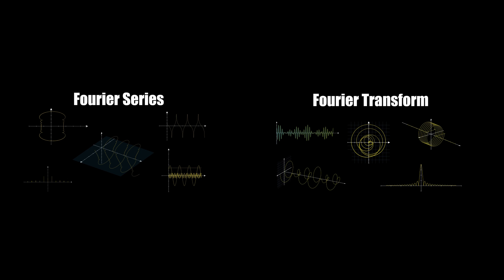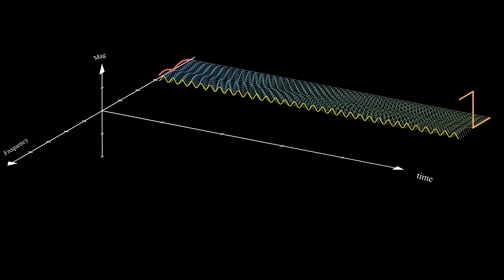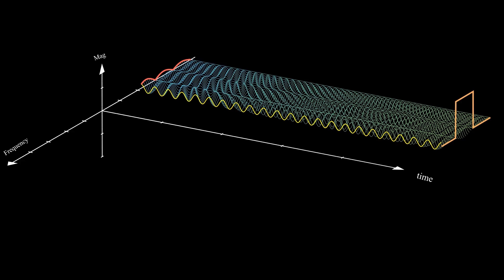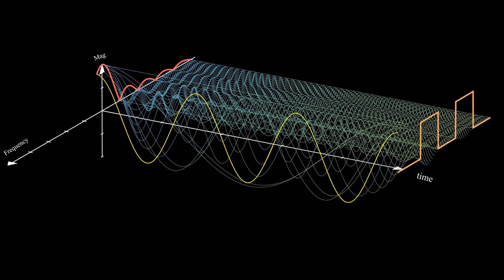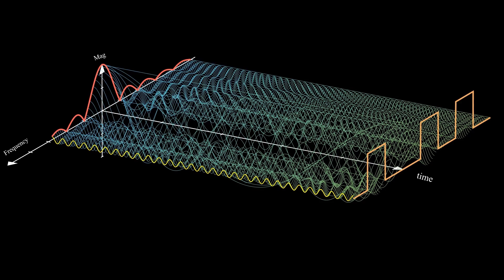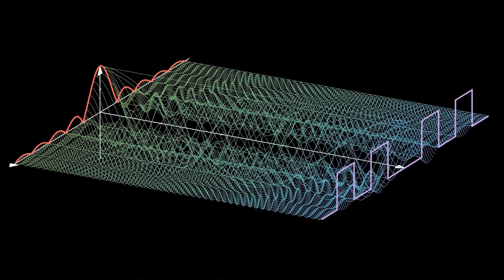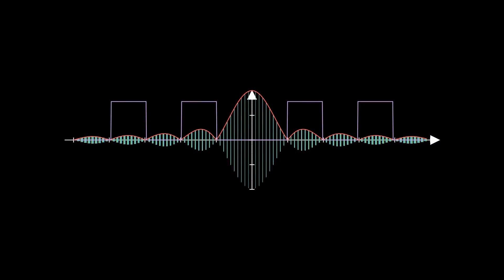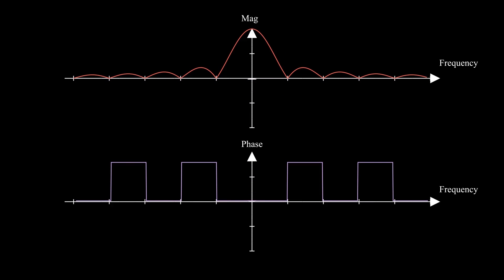You can revisit Fourier series and Fourier transform videos on this channel for more information. The bottom line is: if we trace the amplitude of these sinusoids as well as the amount of shift from the zero position over all frequencies, we get the amplitude and phase spectrum of the signal. Every point in these graphs is hiding a sinusoid oscillating with some frequency, having some amplitude and some amount of phase shift.